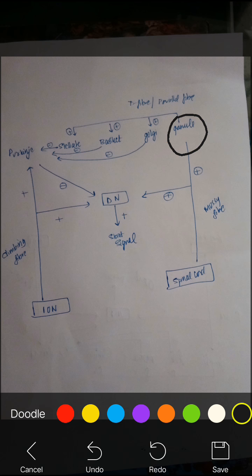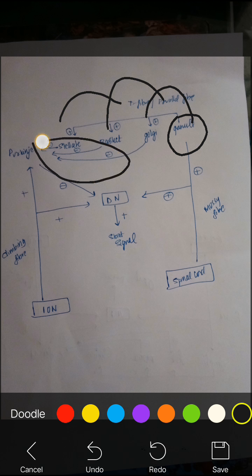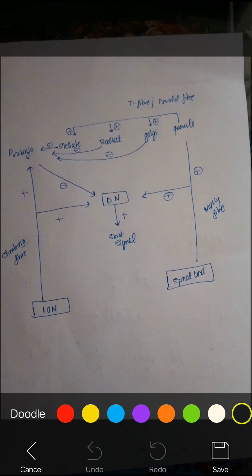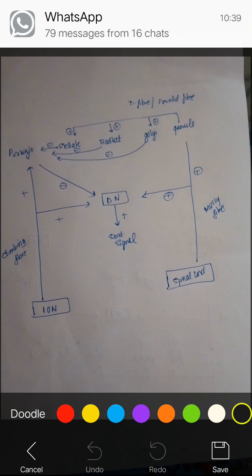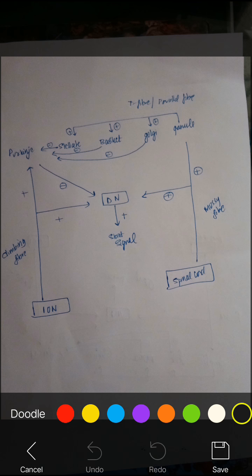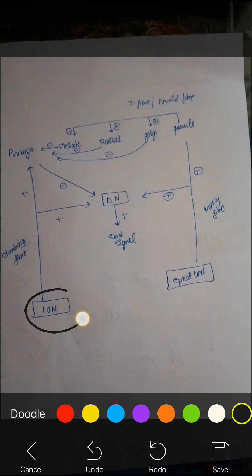The output from the cells is always inhibitory, except the output from granule cells which is excitatory. The granule cell excites all these cells, but the output coming from all these cells is inhibitory to the Purkinje cell. Further, the output from the Purkinje cell is also inhibitory to the deep nucleus.